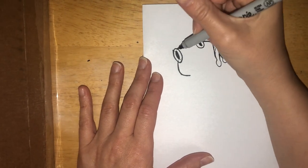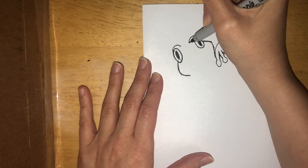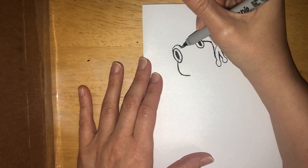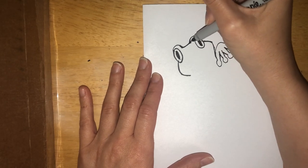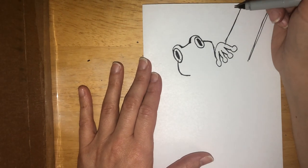Alright, over his head, or over each eye I should say, you're going to make two curves and then they come together with a line in the middle. See how I did that? Alright, that's our frog's eyes.